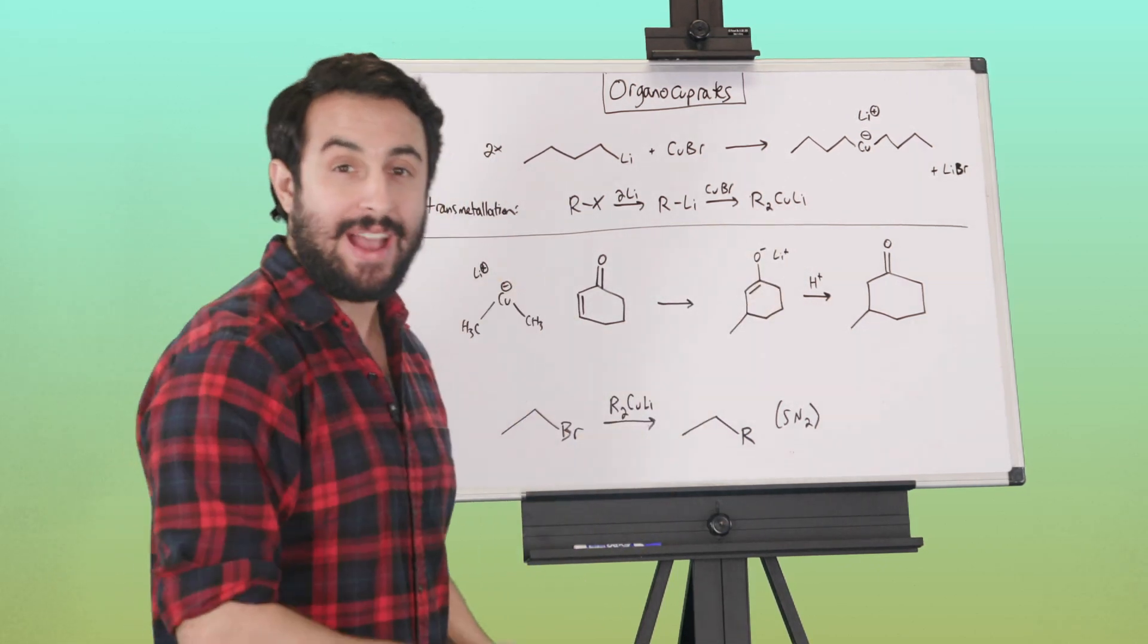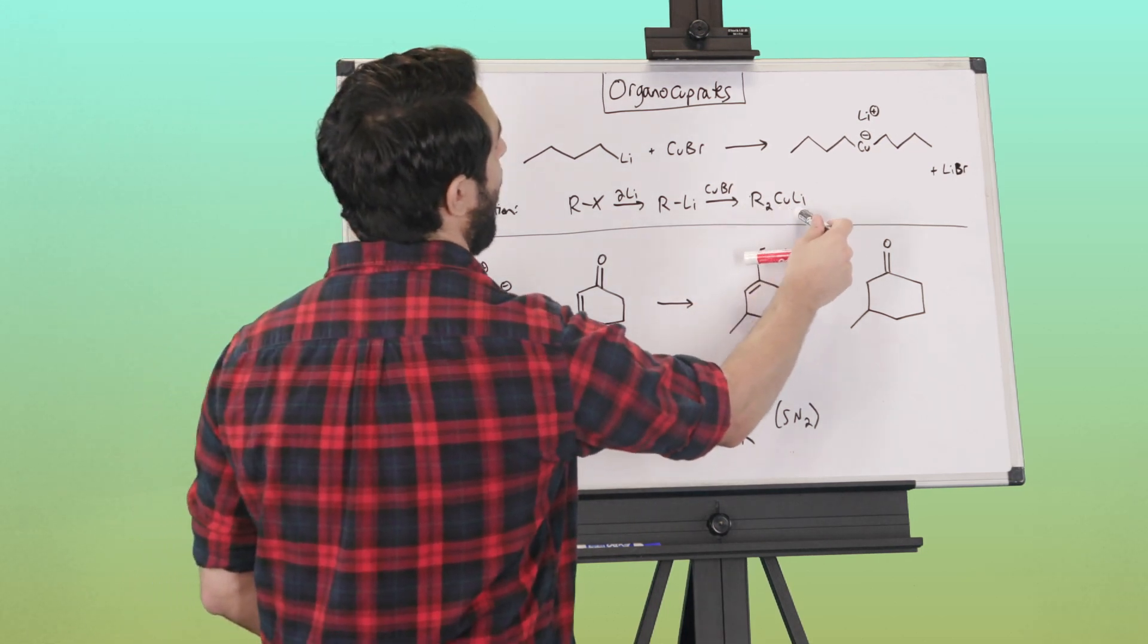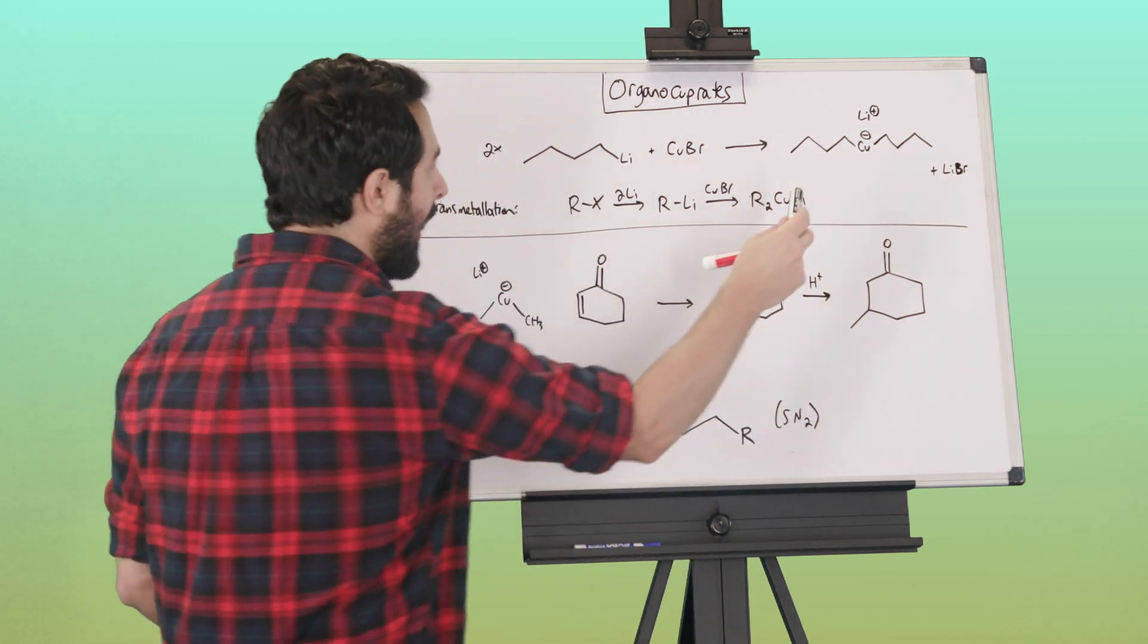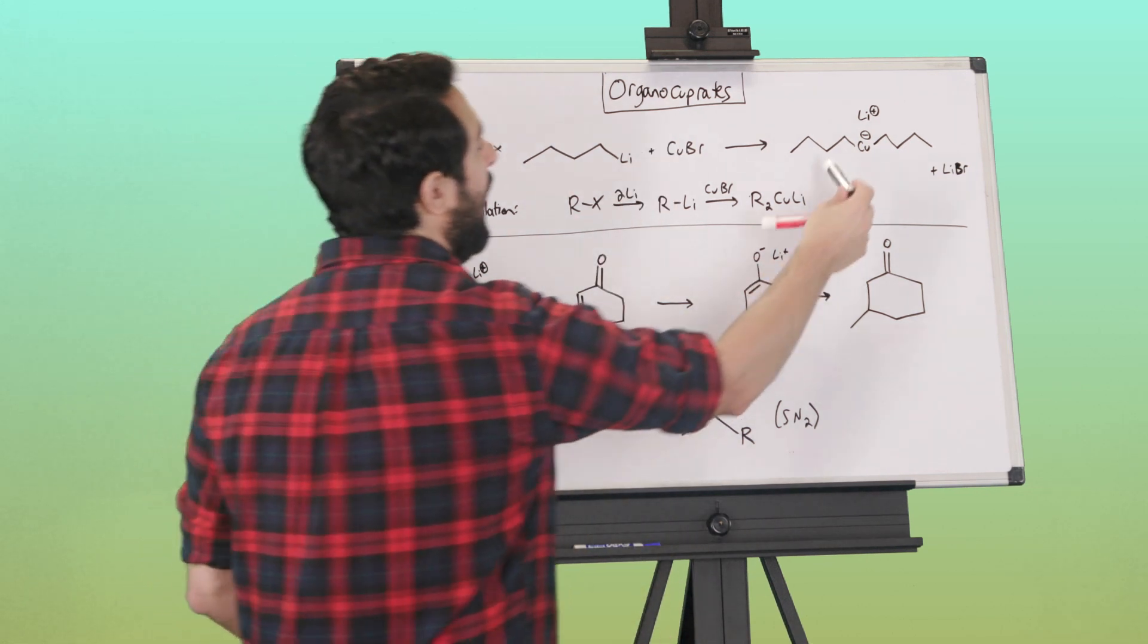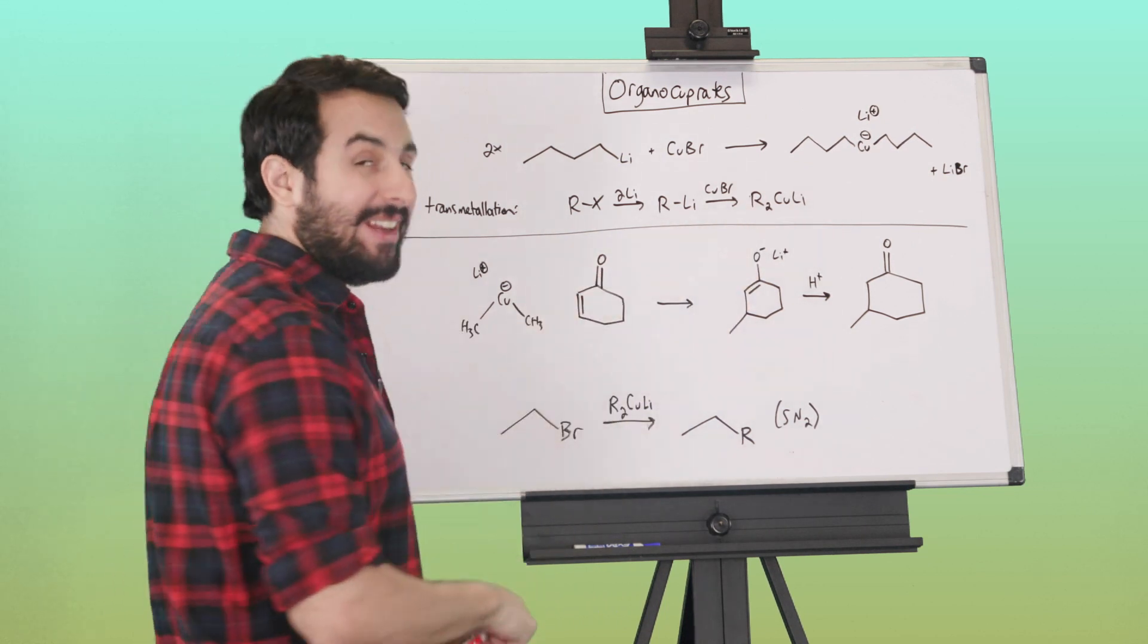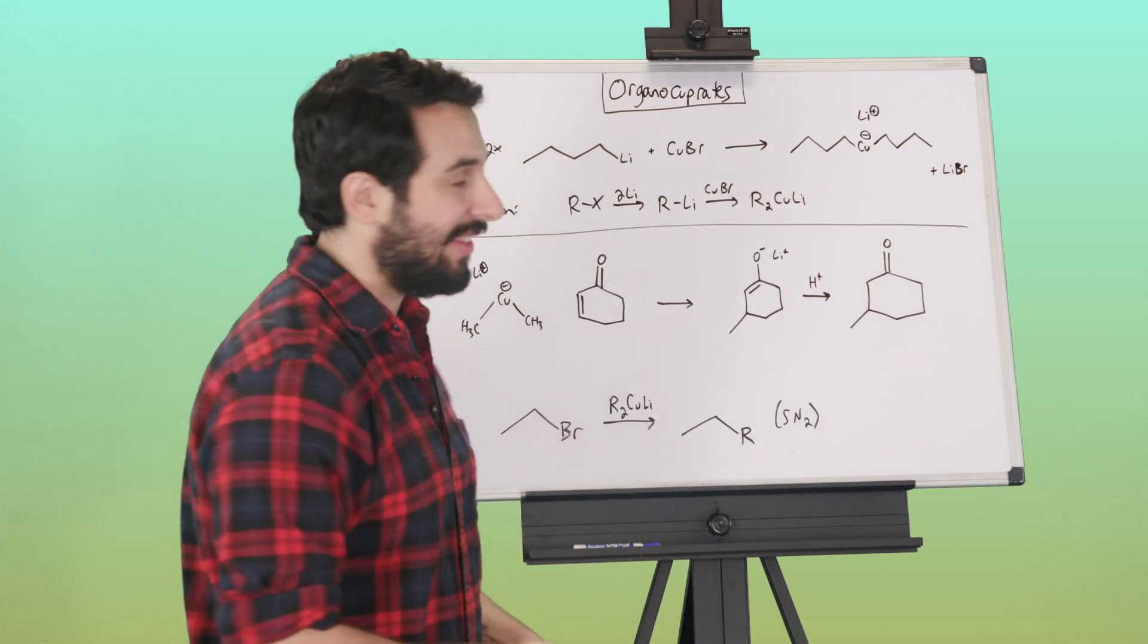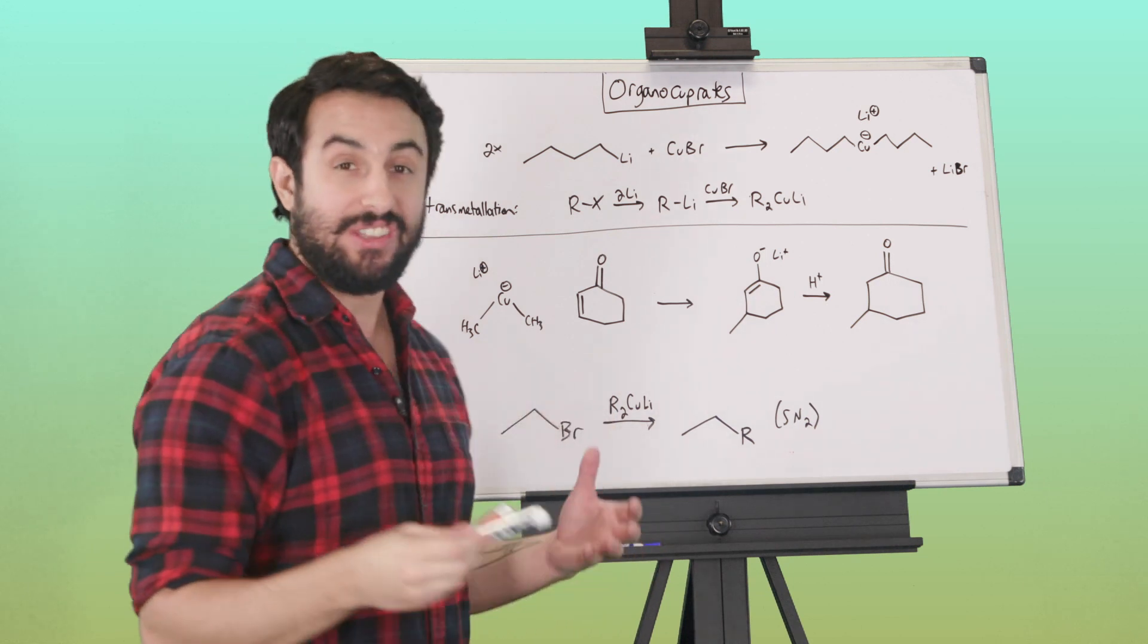This is the way we're going to see it typically. If it's written out on a test or something, we're going to see R2CuLi, and we need to know what that means. We need to know that copper is the central atom there and that it bears a formal negative charge—that's very important in terms of what that reagent will do. It's got the two alkyl groups, whatever they are, projecting from that copper anion, and then lithium serves simply as a counterion.